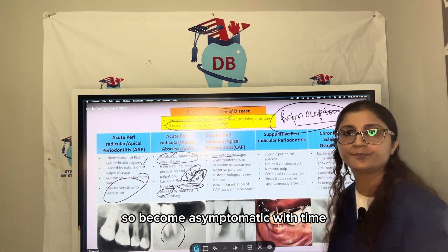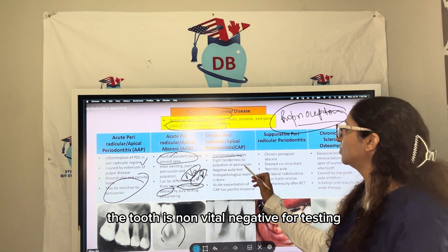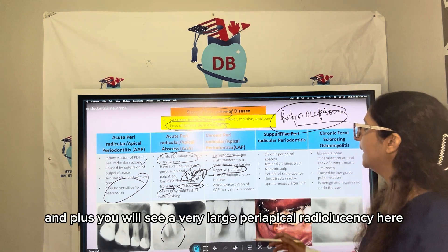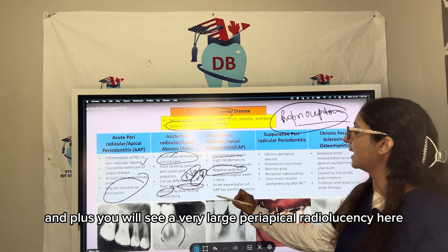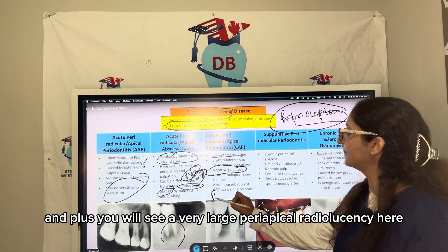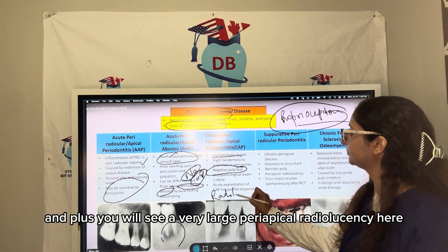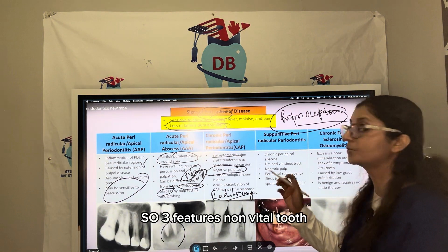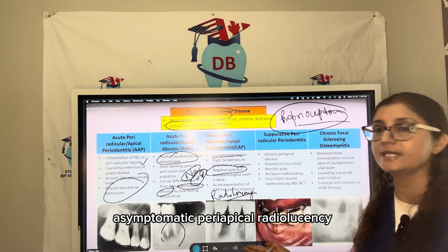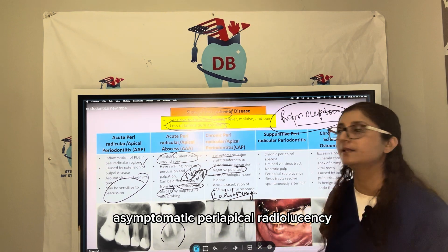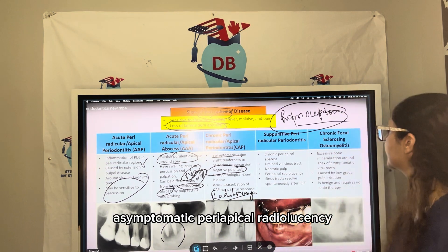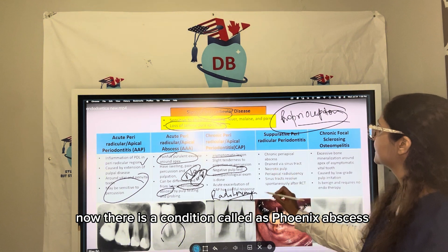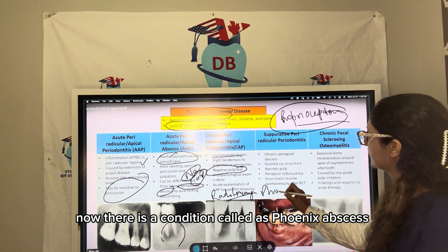Chronic Apical Periodontitis (CAP) is a long-standing, asymptomatic condition. The tooth is non-vital with negative pulp testing, and you will see a periapical radiolucency. The three key features are: non-vital tooth, asymptomatic presentation, and periapical radiolucency.